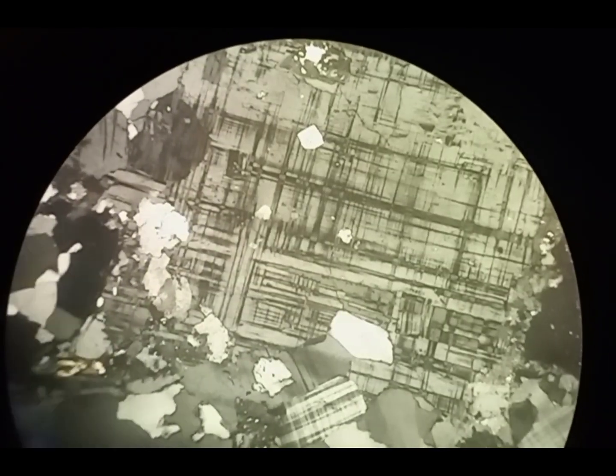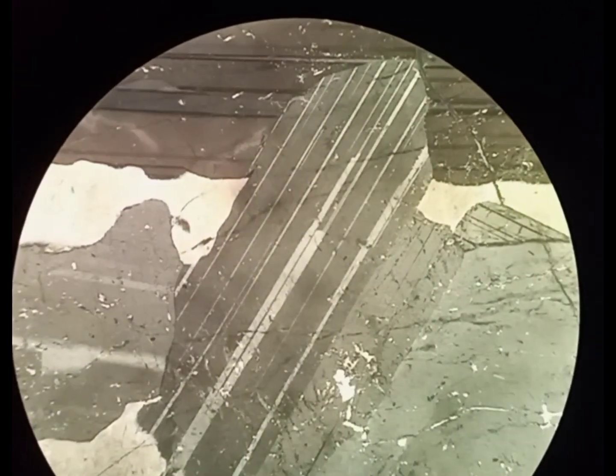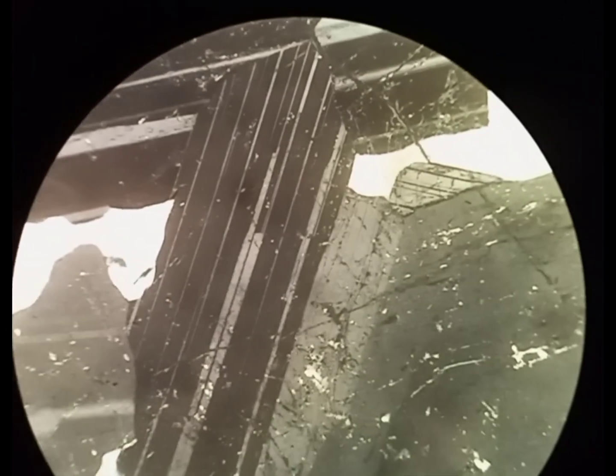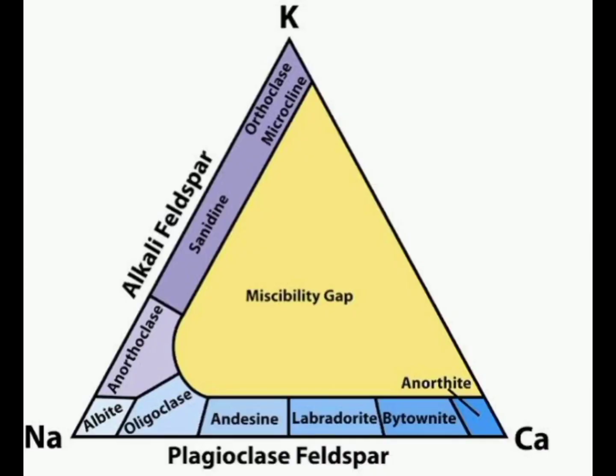On rotation of the stage, it shows gray to white color. It shows different kinds of twinning, which is an important characteristic for the identification of feldspar in XPL mode. We have two types of feldspar: alkali feldspar and plagioclase feldspar.